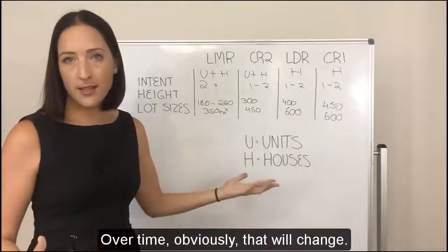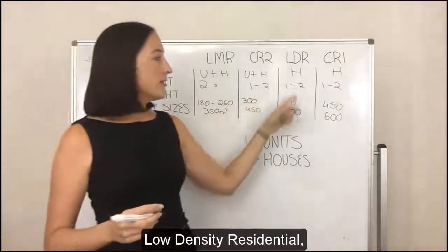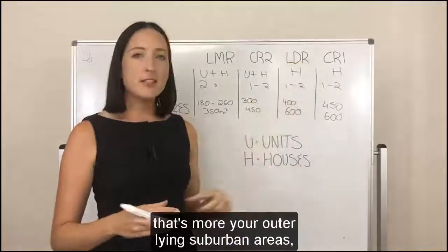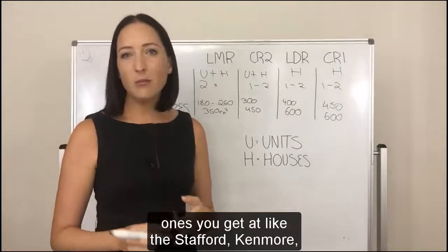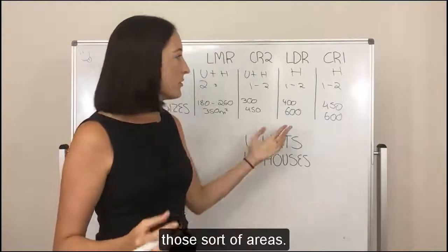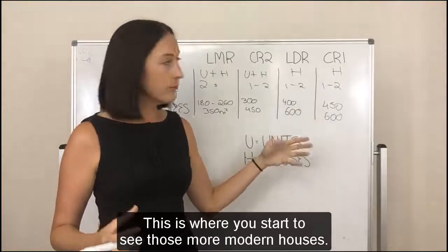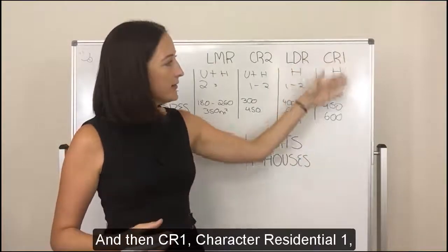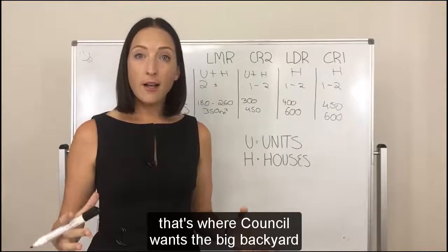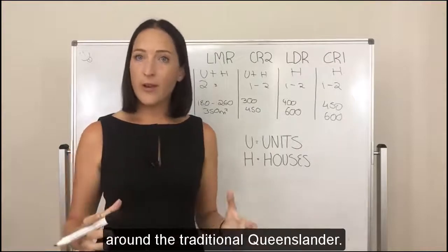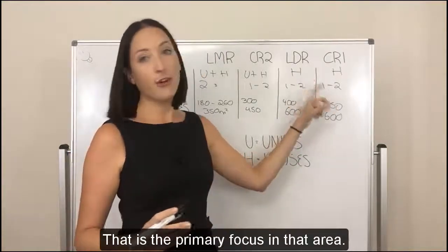Low density residential is more your outlying suburban areas — once you get out to Stafford, Kenmore, those sorts of areas. This is where you start to see more modern houses. And then CR1, character residential 1, is where council wants the big backyard around the traditional Queenslander. They want to preserve that character — that is the primary focus in that area.